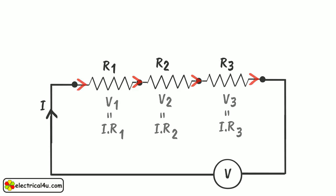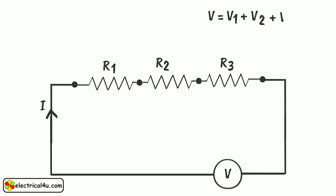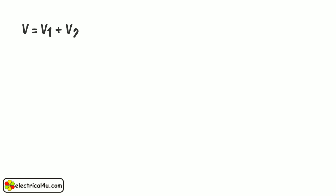As per laws of circuits theory, entire voltage V applied to the circuit is equal to the sum of the voltage drops across individual resistor. That means V equals V1 plus V2 plus V3 equals I dot R1 plus I dot R2 plus I dot R3. This is equation 1.